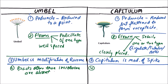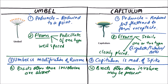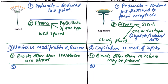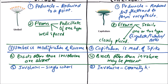Regarding bracts, in umbel, bracts other than the involucre may be present, and the involucre may have a single whorl. While in capitulum, the involucre generally has more than one whorl.